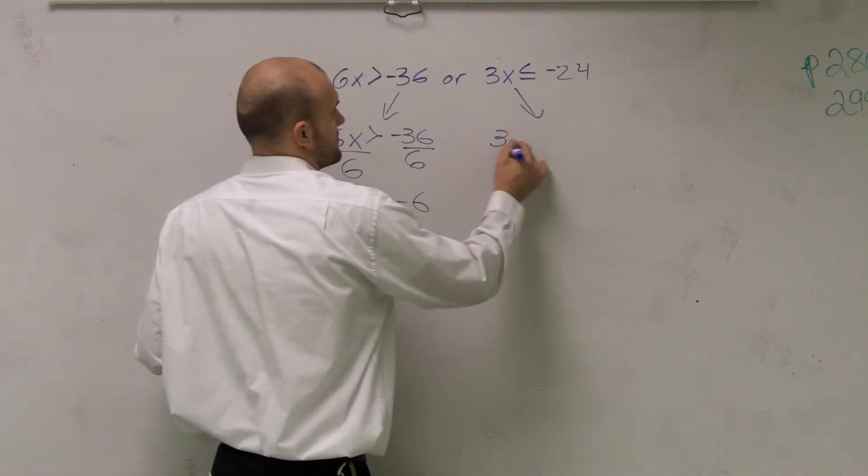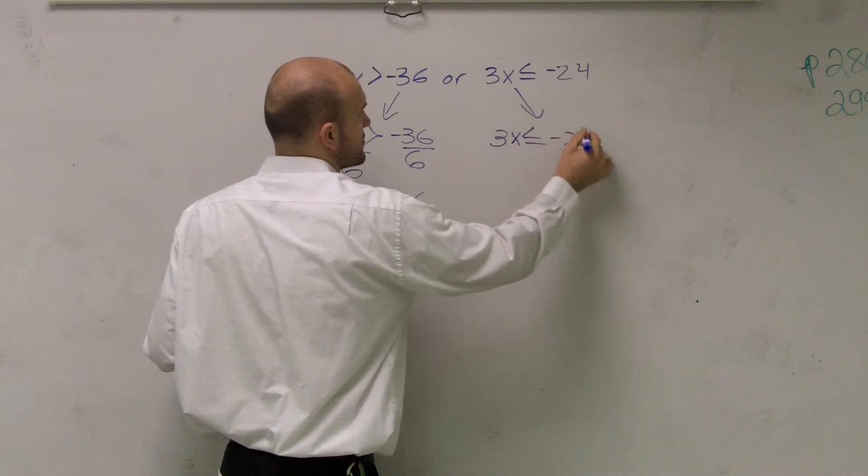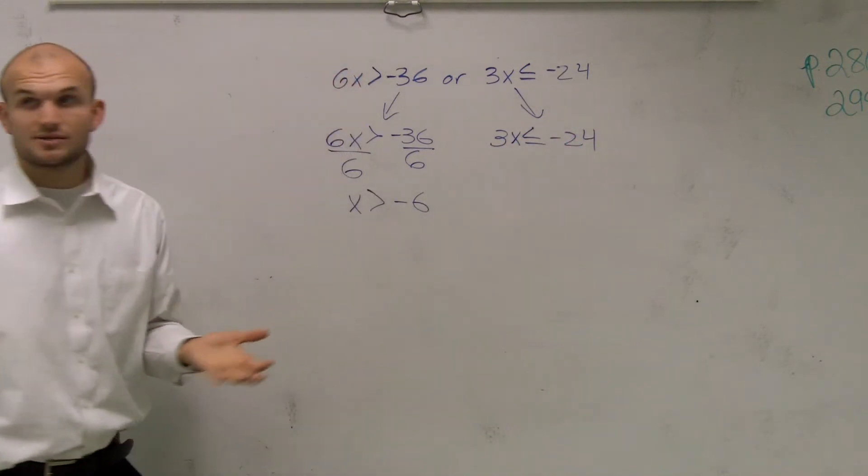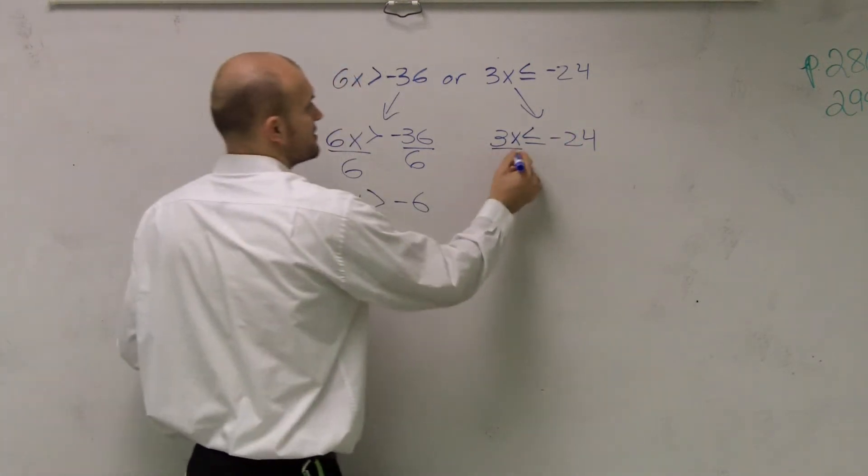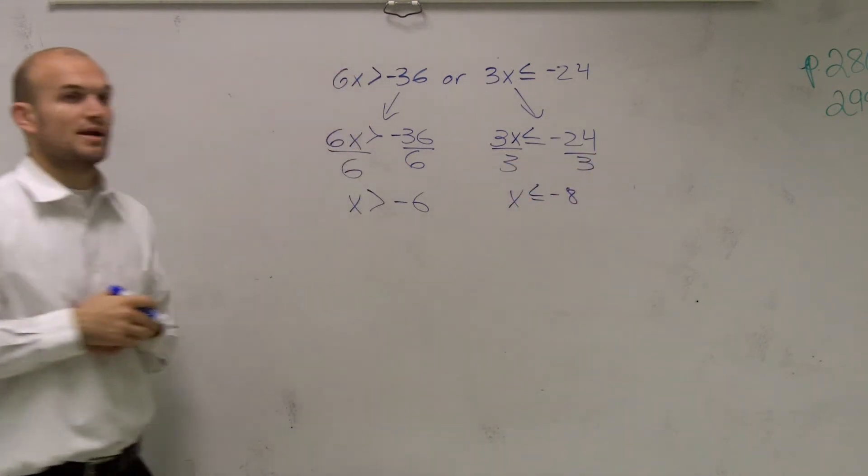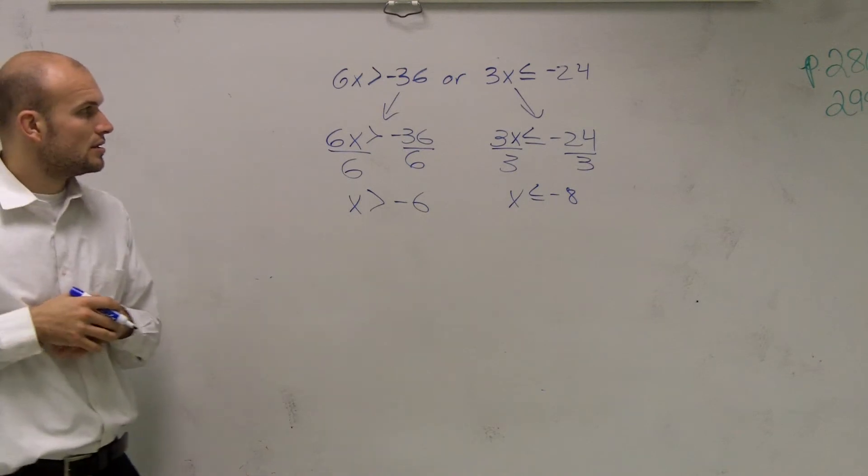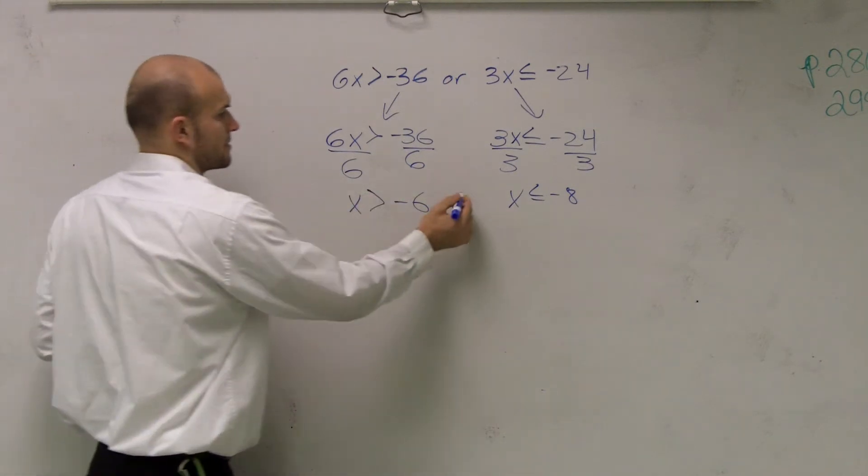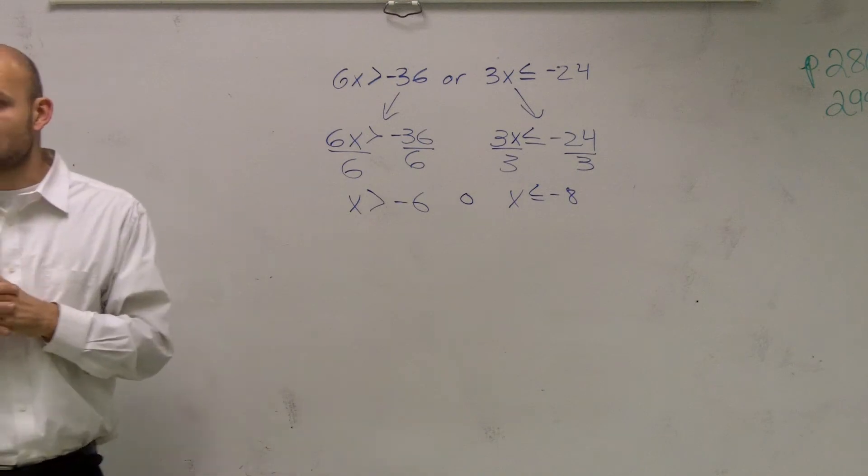Then the next one, I have 3x is less than or equal to negative 24. Solve for this. We've got to do a division again, right, divide by 3. So I have x is greater than negative 6, or x is less than or equal to negative 8.